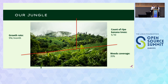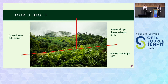In our jungle scenario we now have a beautiful dashboard with KPIs like growth rate, count of ripe bananas, and weed coverage. These are the right KPIs for us because we want to survive in the jungle — a biologist might have different KPIs around the animals living there, but for us these are the right ones. We can survive and live in our jungle.